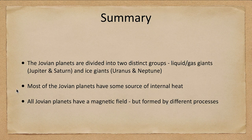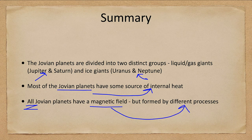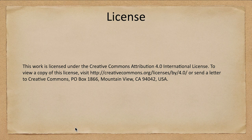Let's finish up with our summary. We looked at the Jovian planets and divided them into the liquid and gas giants — Jupiter and Saturn — and the ice giants — Uranus and Neptune. We looked at the fact that most of these Jovian planets have some source of internal heat, and that all of them have some kind of magnetic field, but the processes by which those fields are formed is different. That concludes this lecture on the structures of the giant planets. We'll be back again next time for another topic in astronomy — have a great day everyone.